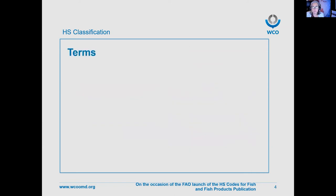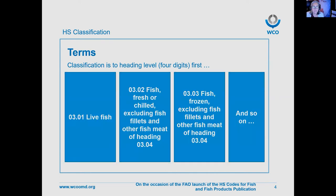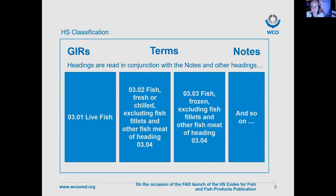The next element is the terms — simply the descriptions you read when you go through the HS or a customs tariff based on the HS. GIR one also tells us that we start classification at the heading level, four digits first. Here are the first few four-digit headings of Chapter Three. We know the headings because they have four digits starting with zero-three, and the words that follow are the terms of the headings. The process is to go through and check the terms along with the notes and the GIRs as needed to find the correct heading for your goods.